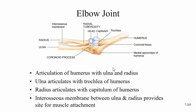The elbow joint is the articulation of the humerus with the ulna and radius. The ulna articulates with the trochlea; the radius articulates with the capitulum. Between the radius and ulna is the tough interosseous membrane, which serves as a site for muscle attachment and prevents the radius and ulna from shearing apart, providing stability while remaining flexible.